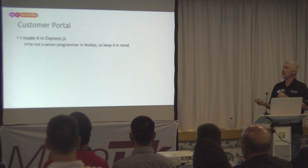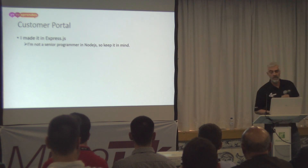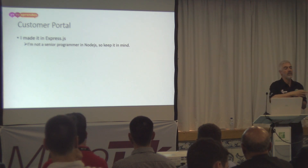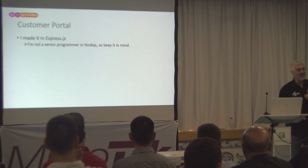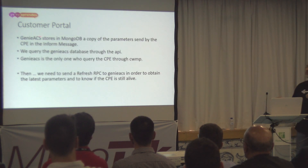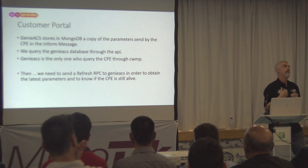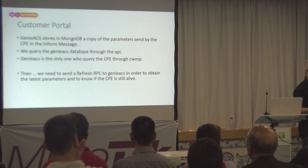I built this using Express and JavaScript — I'm not a senior programmer, I just wanted to learn Express and started the project with it. GenieACS stores in MongoDB a copy of the parameters that the client sent to the server, so it's a copy of the information. When we query GenieACS, we query that copy.